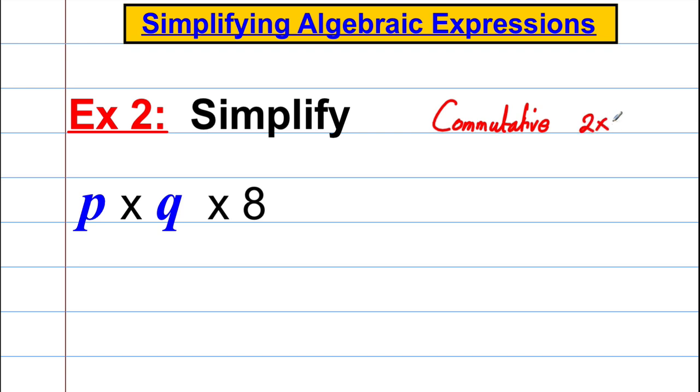So multiplication for example 2 multiplied by 3 multiplied by 4 is the same as 3 multiplied by 4 multiplied by 2. It's the same as 4 multiplied by 3 multiplied by 2 and the various other combinations you have. So here this is clearly the same thing as 8 multiplied by p multiplied by q and we could write that as 8pq.